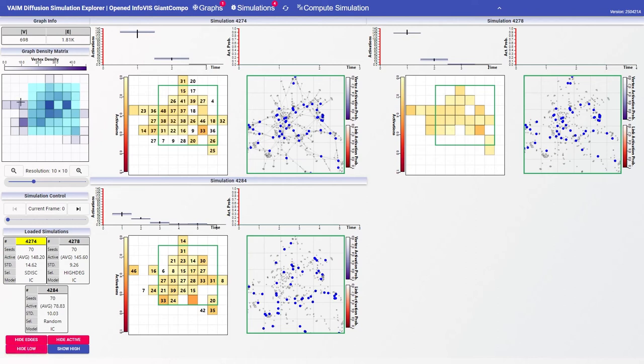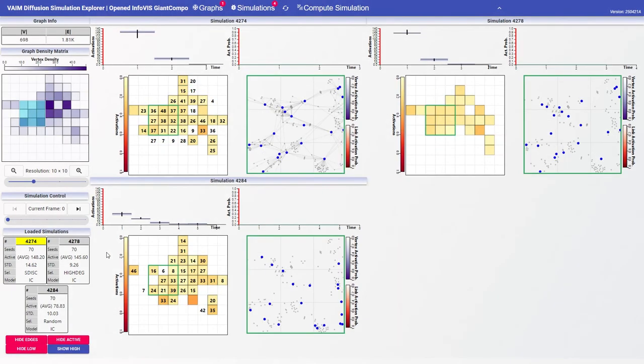We lock the node link view onto an area where random has poor coverage compared to the other simulations.